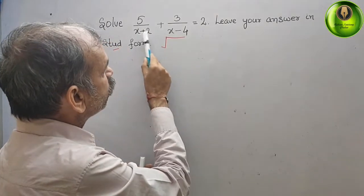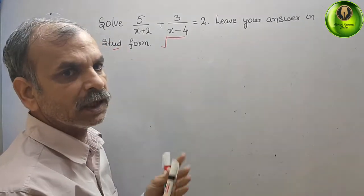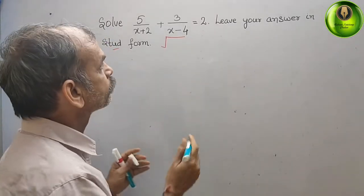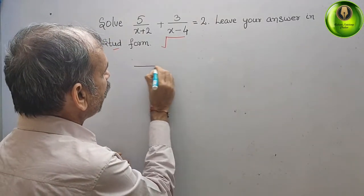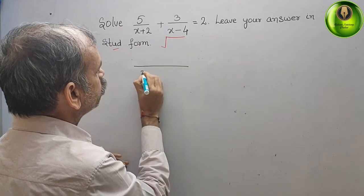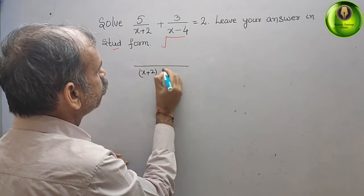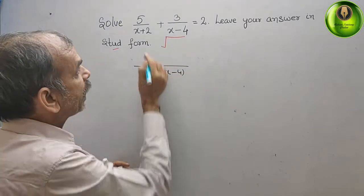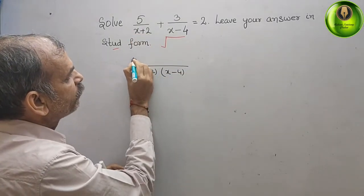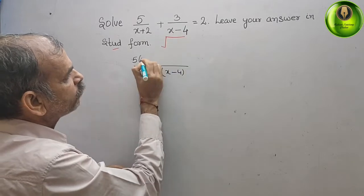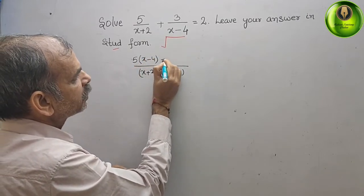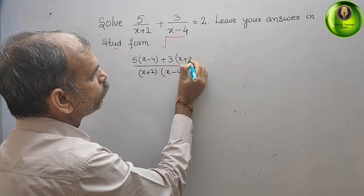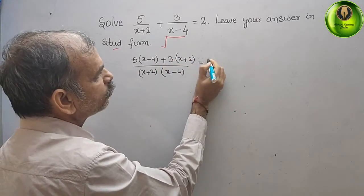First, what we will do is take the LCM of the denominators. The LCM will be (x+2)(x-4), and on the numerator side it comes as 5(x-4) + 3(x+2), which is equal to 2.